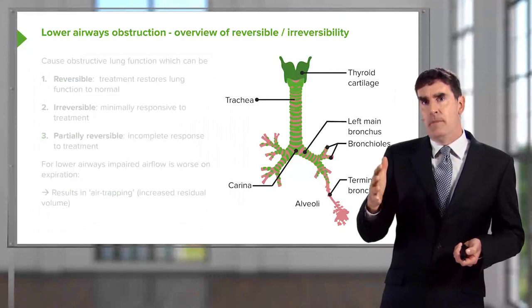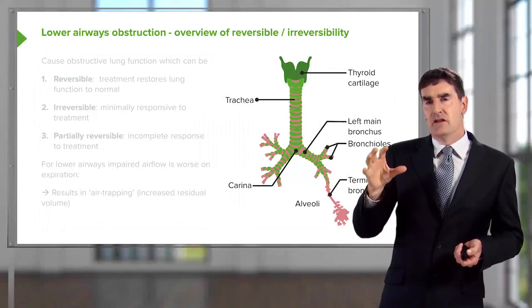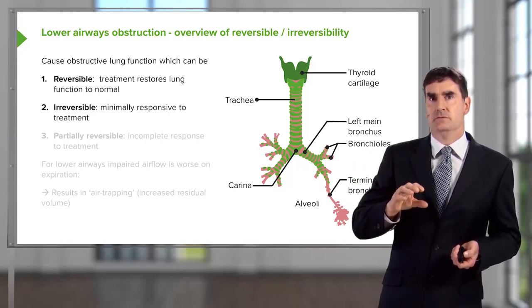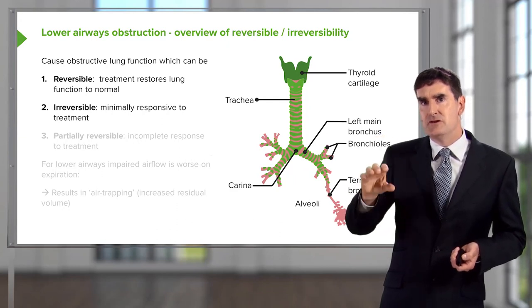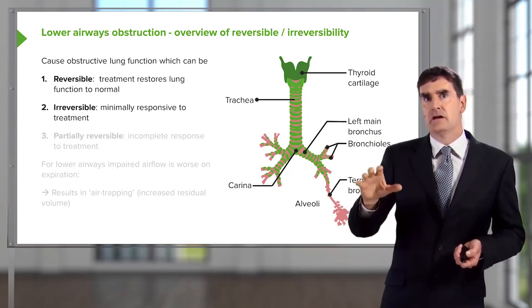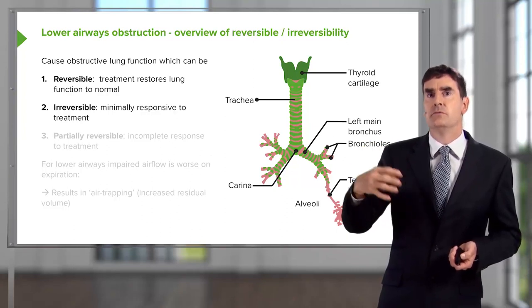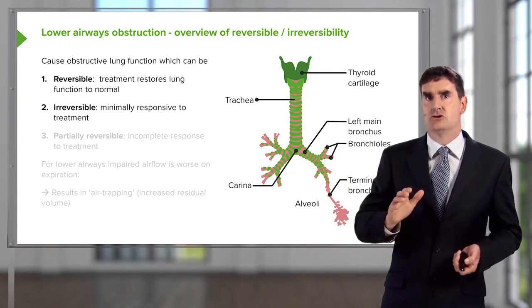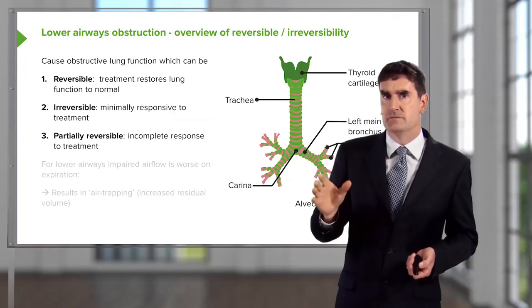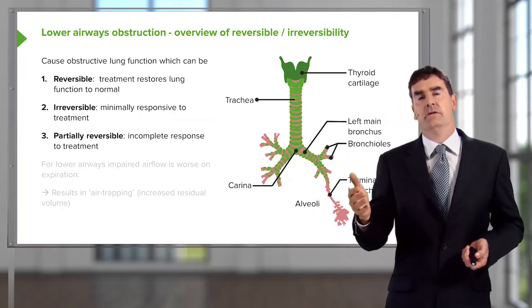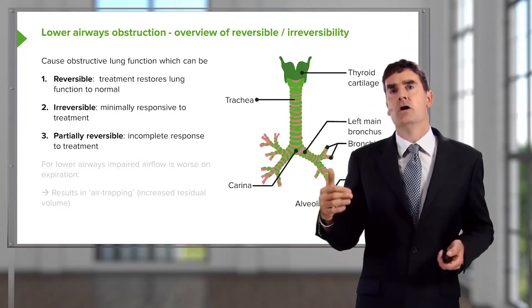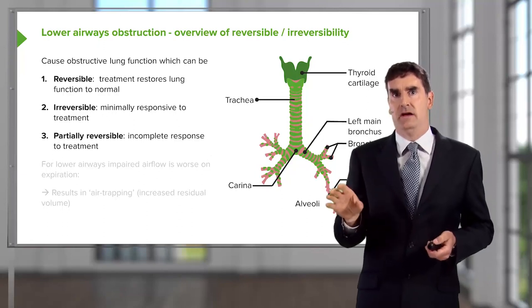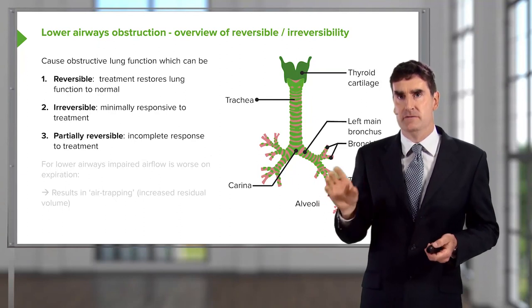A major concept in airways disease is that the obstruction that occurs can be described as reversible or irreversible. The prevention of effective airflow can be reversed in reversible disease — it can be improved with treatment — whereas with irreversible disease, it cannot. There are patients in between with partially reversible airways disease, where obstruction can be partially reversed but doesn't return to normal. Largely speaking, asthma is a reversible airways disease, whereas COPD is an irreversible airways disease.